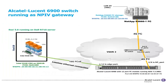This is the high-level topology diagram for the NPIV setup. ESXi with Intel X520 on the left is connected to the Alcatel-Lucent 6900 switch Ethernet ports 1-12. Fiber Channel port 2-6 is connected to the FC switch, and the FC switch is connected to NetApp FC storage.